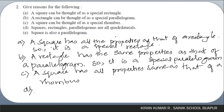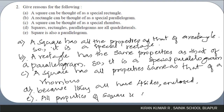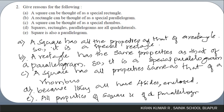Square, rectangle, and parallelogram are all quadrilaterals because they all have four sides enclosed. A square is also a parallelogram because all properties of a square apply to a parallelogram as well.